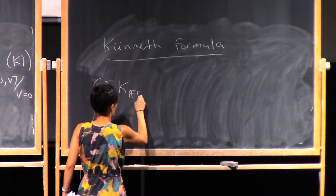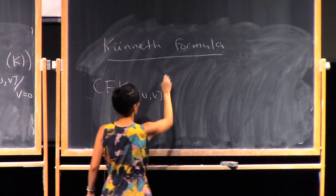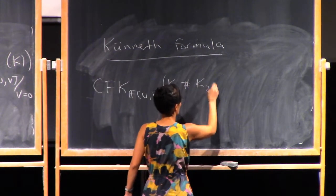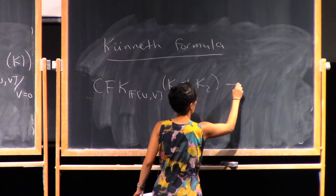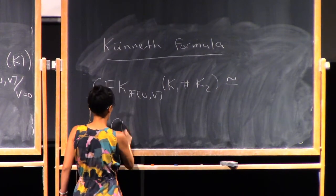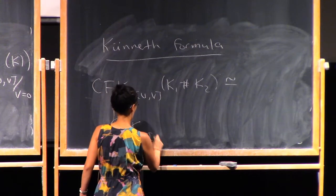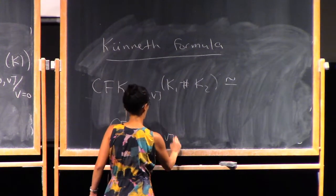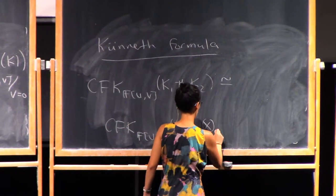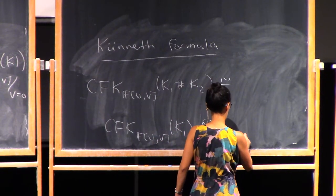It says that the knot flow complex for the connected sum of two knots is chain homotopic to the tensor product over the ground ring of the knot flow complexes for each of your knots.